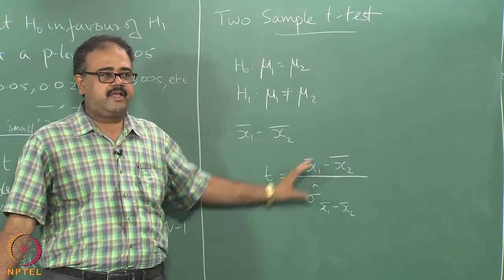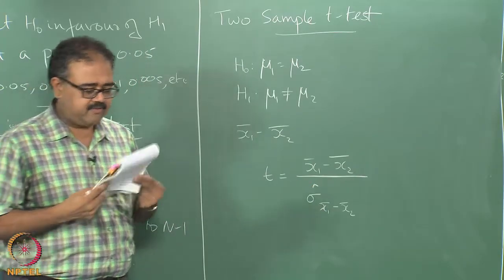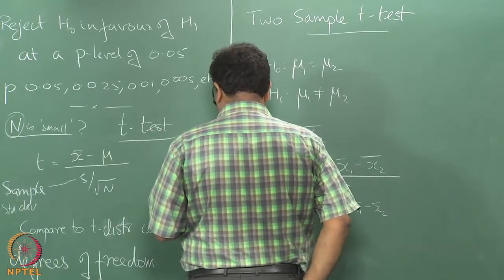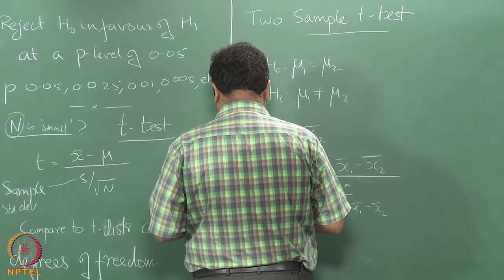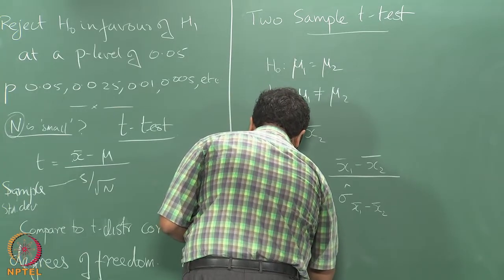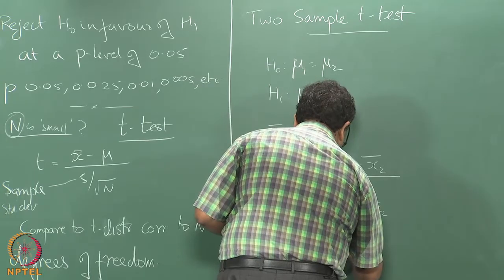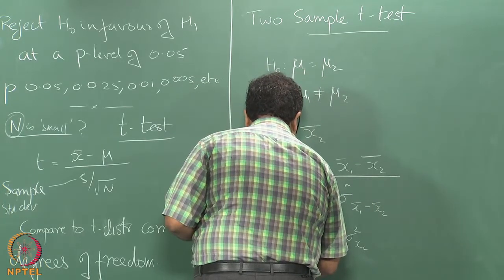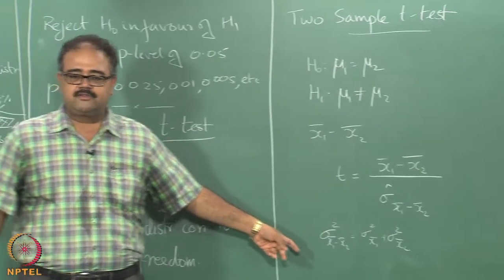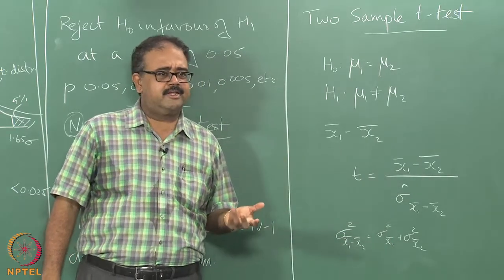This is 0-mean, so it's x1_bar minus x2_bar minus 0, divided by the variance. How will I compute the variance? The variance of the difference is actually the sum of the individual variances — intuitively that makes sense.